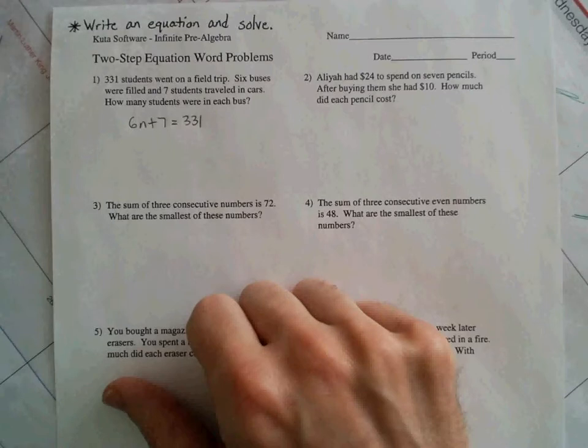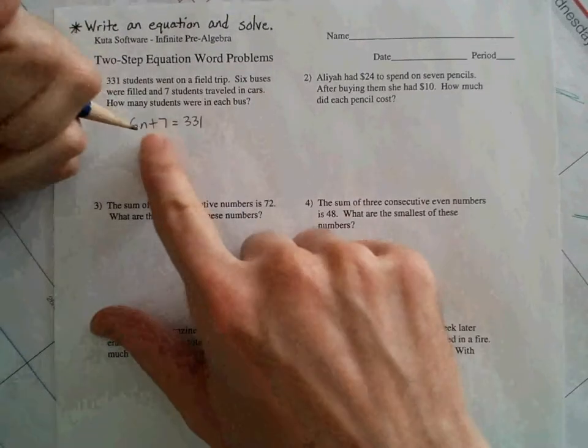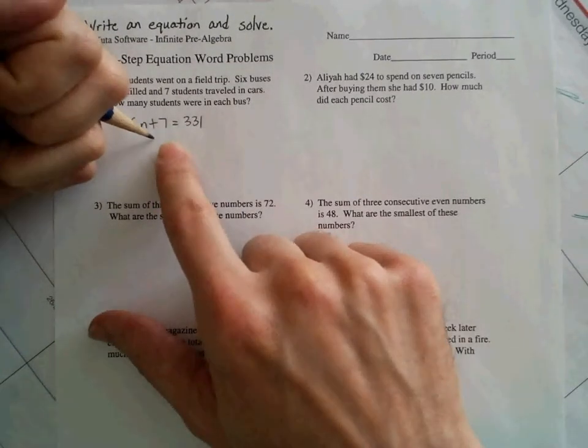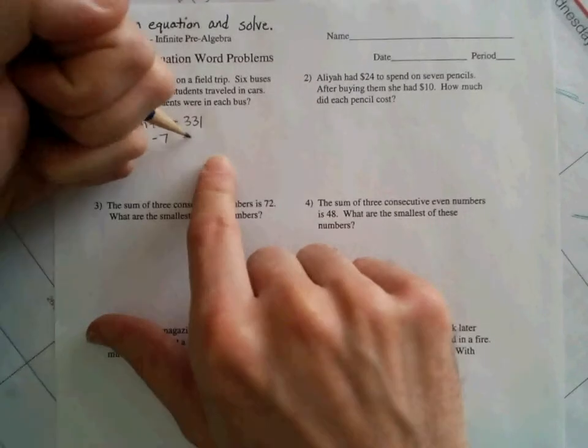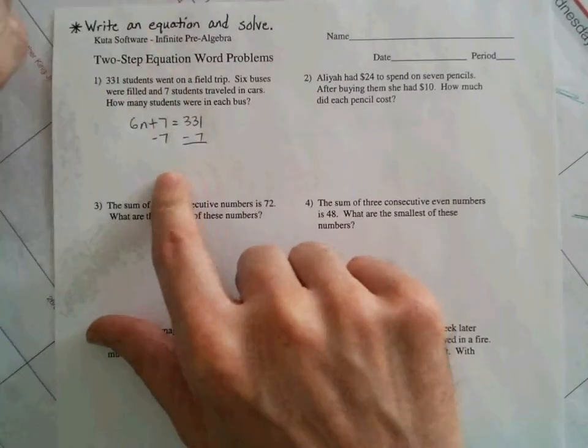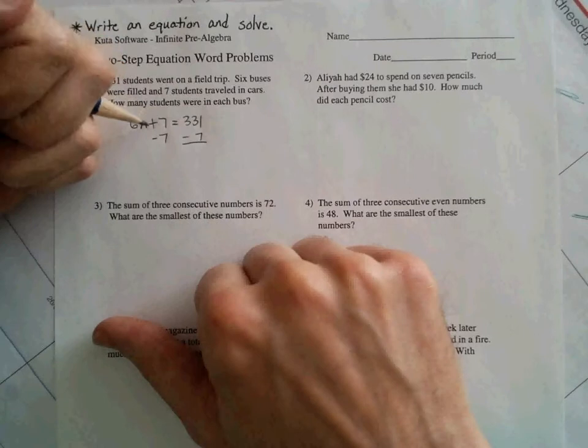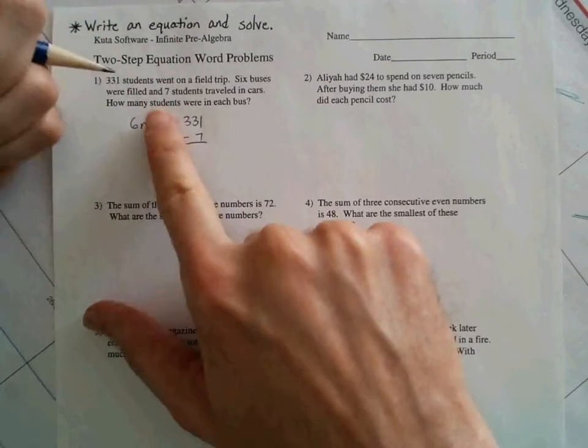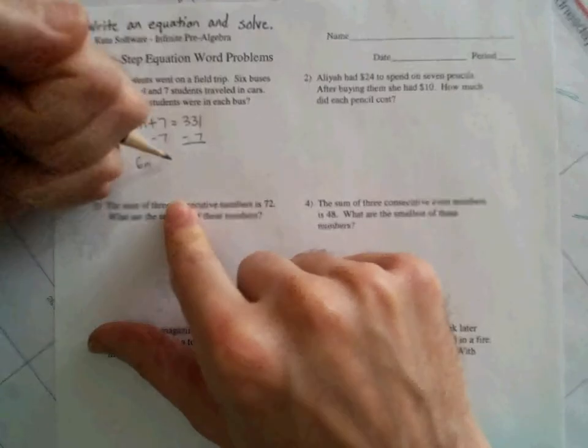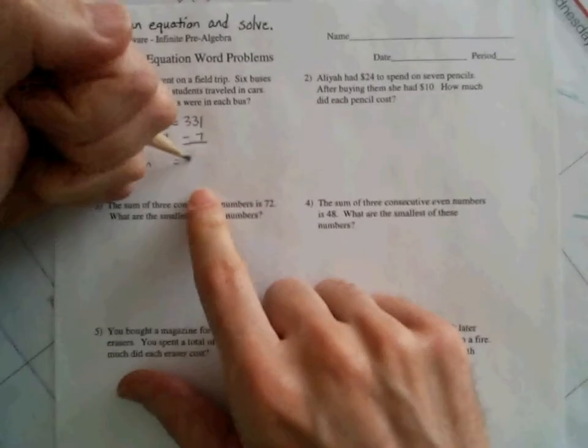So that's an equation set up for this particular problem. When it comes to solving this here, think about the steps we've talked about. Focus on the side with the variable, work with the 7 first. The opposite of adding 7 is subtracting 7. Do it with one side of the equation, do it with the other. This cancels here. You may see me circle it sometimes in my notes. So this cancels. 6n comes down.